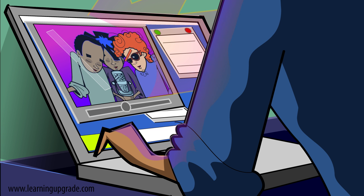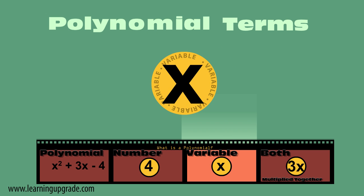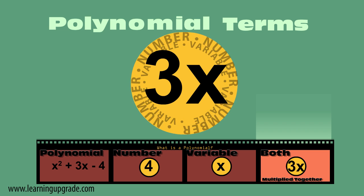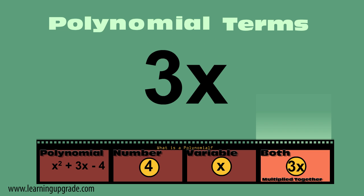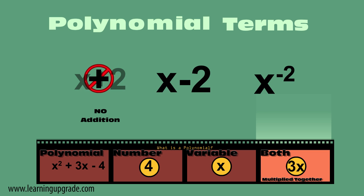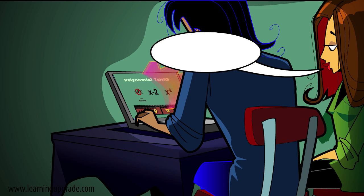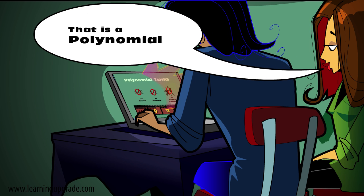What's a polynomial term? It can be a number like 4, can be a variable like x, a number and a variable multiply together, 3x, with no addition and no subtraction and with no negative exponents. That is a polynomial term.